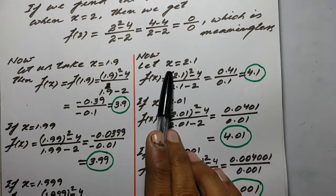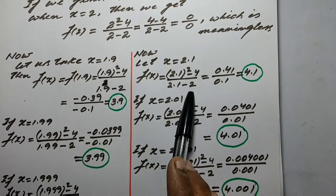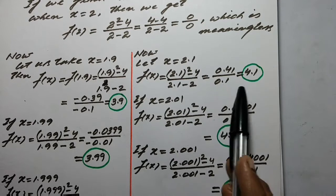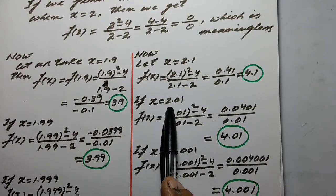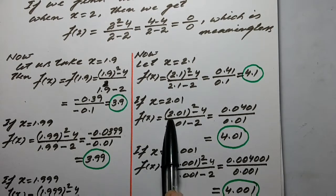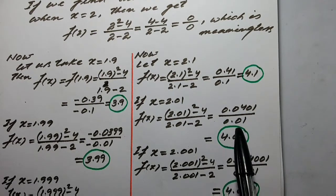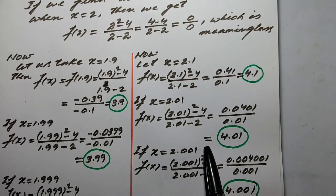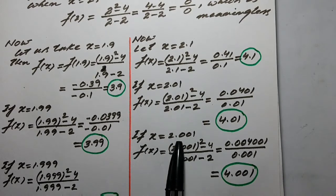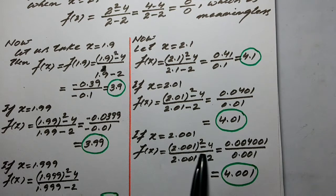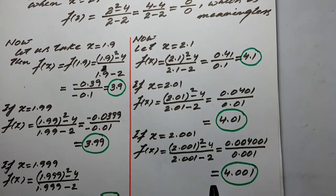Now we take a value closer to 2 but greater than 2, that is x equal to 2.1. We get f(x) equal to 2.1 squared minus 4 upon 2.1 minus 2, which is equal to 0.41 upon 0.1, giving f(x) equal to 4.1. Then for x equal to 2.001, f(x) is equal to 2.001 squared minus 4 upon 2.001 minus 2, which is equal to 0.004001 upon 0.001, and ultimately we get f(x) equal to 4.001.